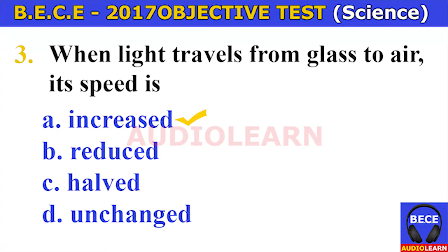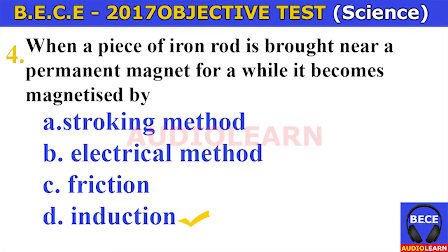Number three. When light travels from glass to air, its speed is A. Increased, B. Reduced, C. Halved, D. Unchanged. The answer is A. Increased. When light travels from glass to air, its speed is increased.